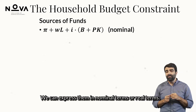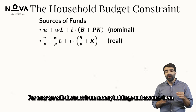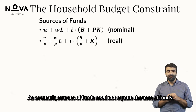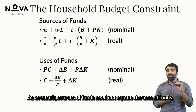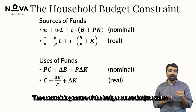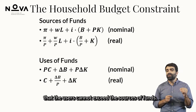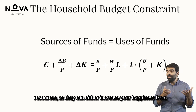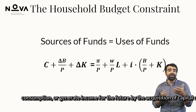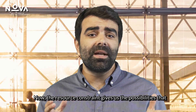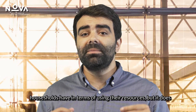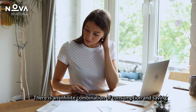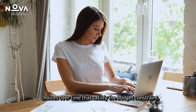labor income and capital gains from bond and capital returns. We can express them in nominal terms or real terms. For now, we will abstract from money holdings and assume them to pay no return and be constant over time. As a remark, sources of funds need not equate the uses of funds. The constraining nature of the budget constraint just states that the uses cannot exceed the sources of funds. However, we assume that it is not optimal not to use available resources, as they can either increase your happiness from consumption or generate income for the future by the acquisition of capital or bonds.